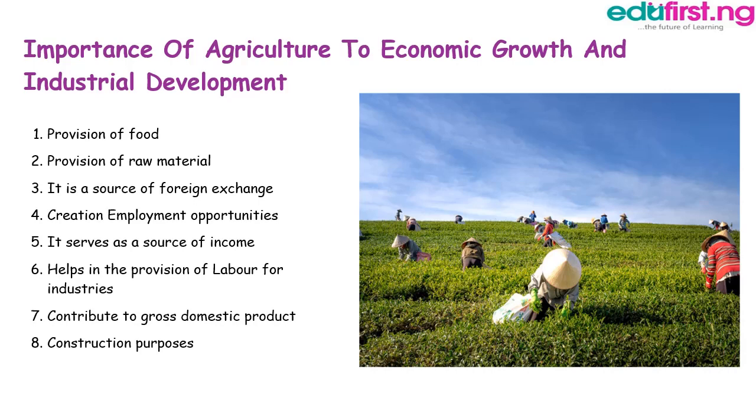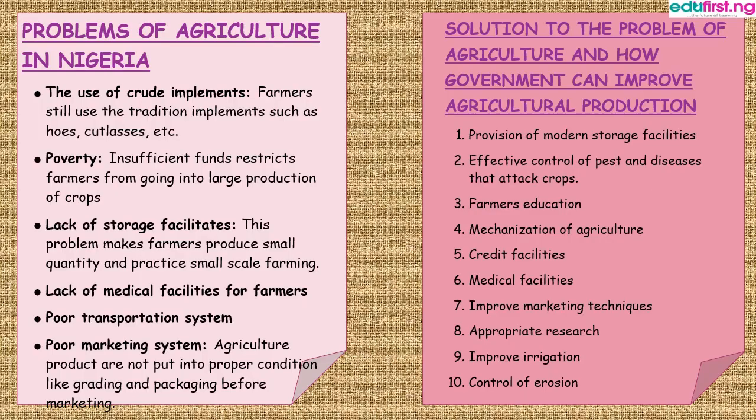Agriculture also contributes to the gross domestic product and is useful for construction purposes. Now let's look at the problems of agriculture in Nigeria. Number one is the use of crude implements — farmers still use traditional implements like hoes and cutlasses when there are more modern instruments like tractors. Number two, poverty: insufficient funds can restrict farmers from going into large-scale production of crops.